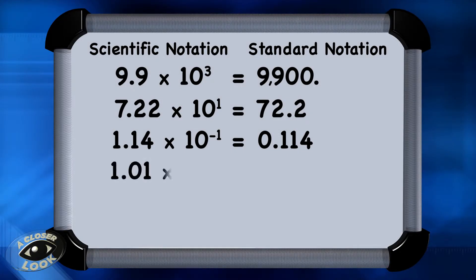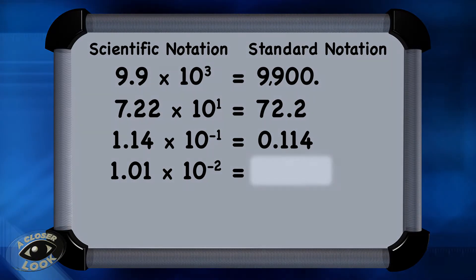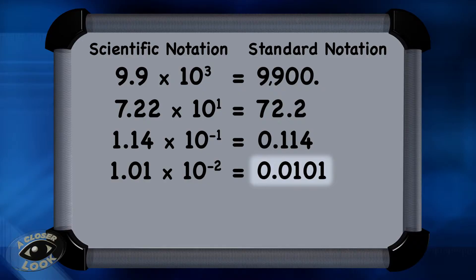Let's look at 1.01 times 10 to the minus second power. To convert it to standard notation, move the decimal two places to the left. Here's the new decimal point — fill in any gaps with zeros. So the standard notation for this number is 0.0101.